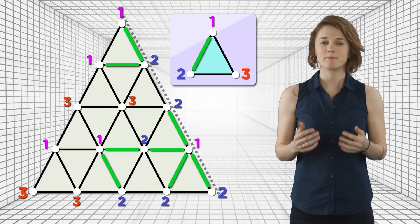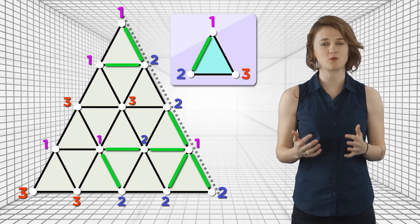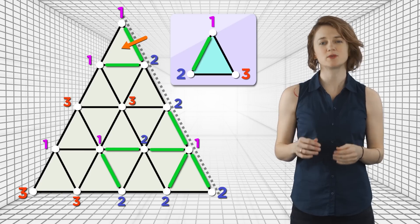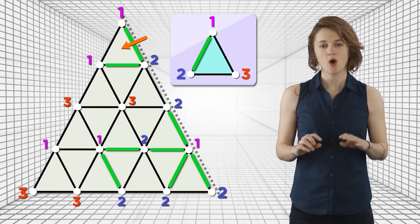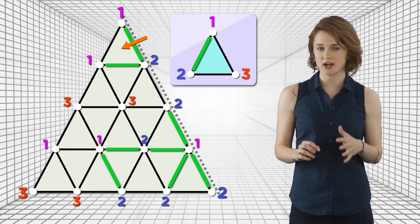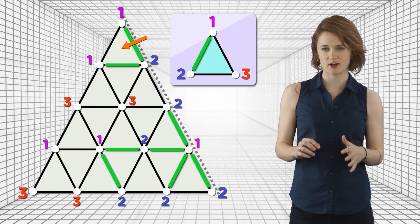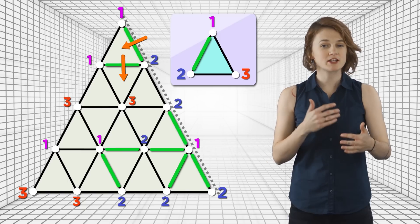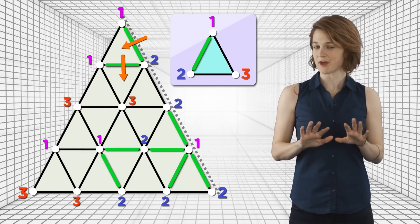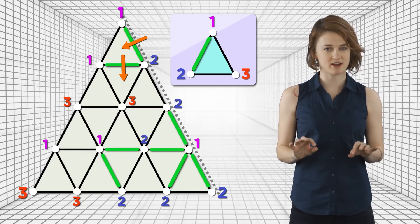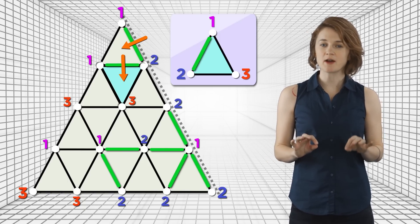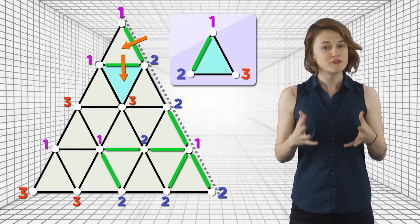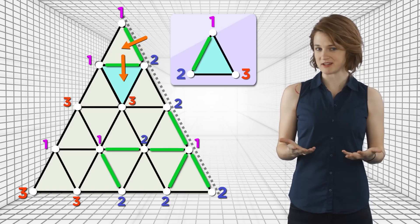It must switch an odd number of times, so there is an odd number of exterior doors. Now, pick one of these exterior doors and walk through it. Either you just walked through the only door in the room, or there's exactly one other door. If there's another door, walk through that. Keep walking through doors without backtracking until you're stuck. Then you've found a room with only one door — a fully labeled room — and you're done.